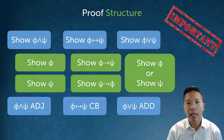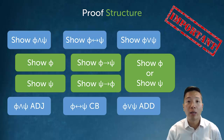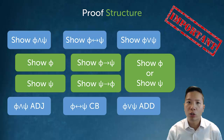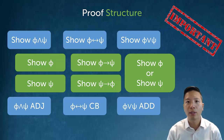For the biconditional, again the introduction rule reveals the structure of the proof. If I need to show phi biconditional psi, I know I need to show the conditional in both directions. Once I show the conditional in both directions, I can join them using the conditional-to-biconditional rule and get the biconditional I wanted all along.